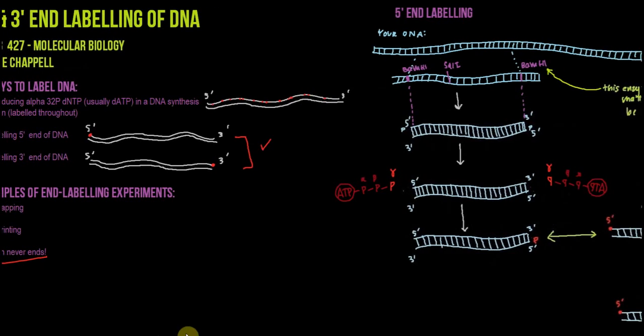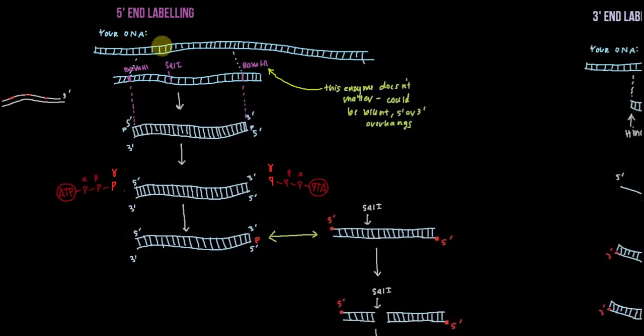The first type of end labeling is 5' end labeling, and this is how it works. So imagine you have a piece of DNA, and you want a subsection of this DNA to be labeled on the 5' end. Let's zoom in on a little part of this DNA, and in this section of this longer piece of DNA, we've got two BamHI sites and a SalI site. And when you select the section of DNA that you want a 5' end label, it doesn't matter what restriction enzyme you use. It doesn't matter whether that restriction enzyme creates blunt ends, 5' or 3' overhangs.